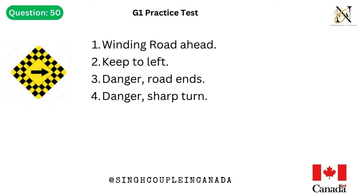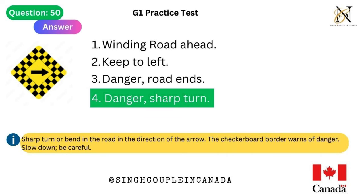Question 50. This traffic sign means: 1. Winding road ahead. 2. Keep to left. 3. Danger, road ends. 4. Danger, sharp turn. Answer is 4. Danger, sharp turn. Sharp turn or bend in the road in the direction of the arrow. The checkerboard border warns of danger — slow down, be careful.